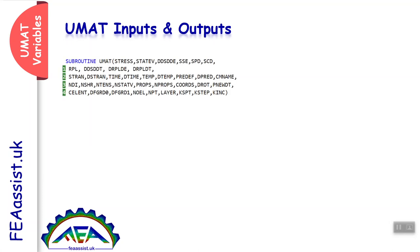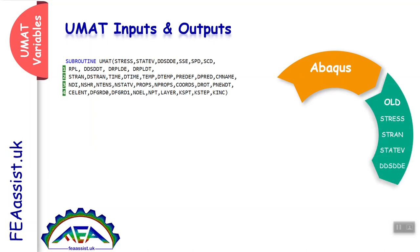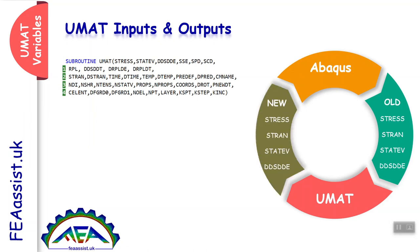UMAT has some variables: stress, strain, DDSDDE, and others. All these variables are computed in Abaqus and transferred to the UMAT. In the UMAT, we need to write equations based on our constitutive behavior to recompute all the variables and return them back to Abaqus. This is how Abaqus and UMAT interact with each other, which is necessary to write a well-working UMAT.